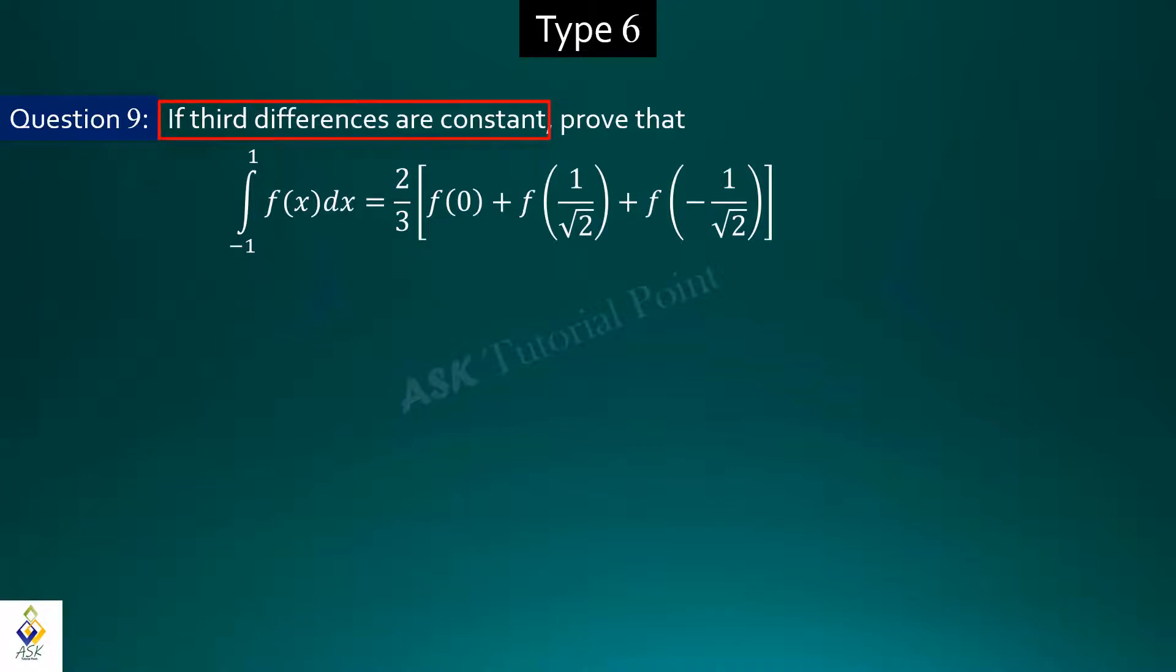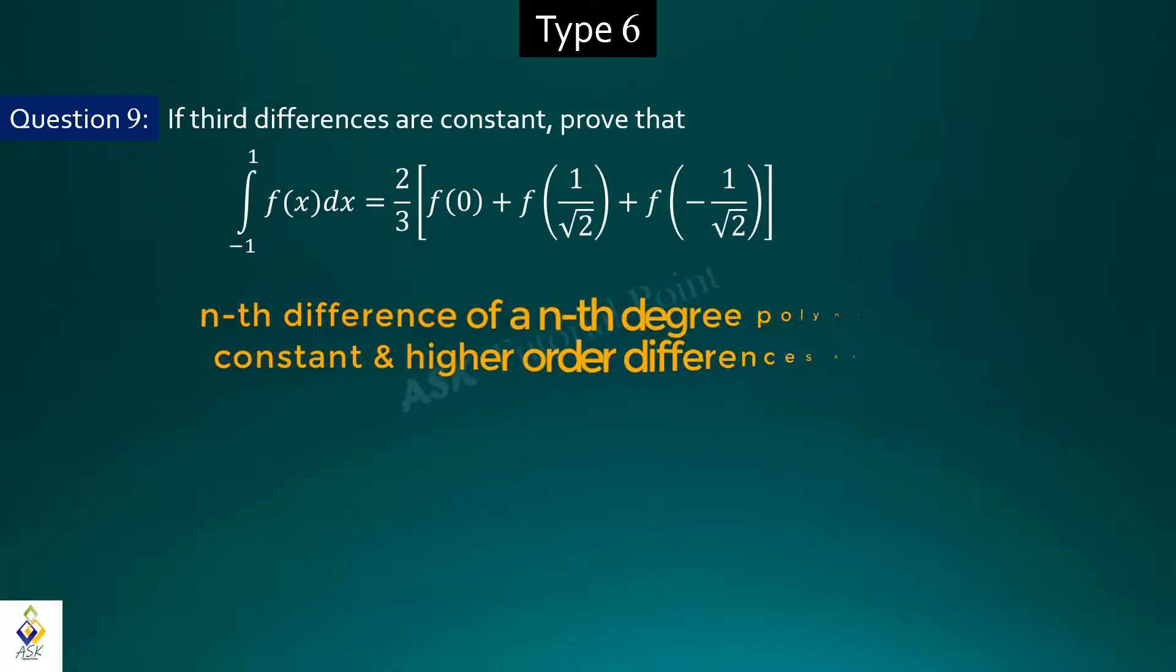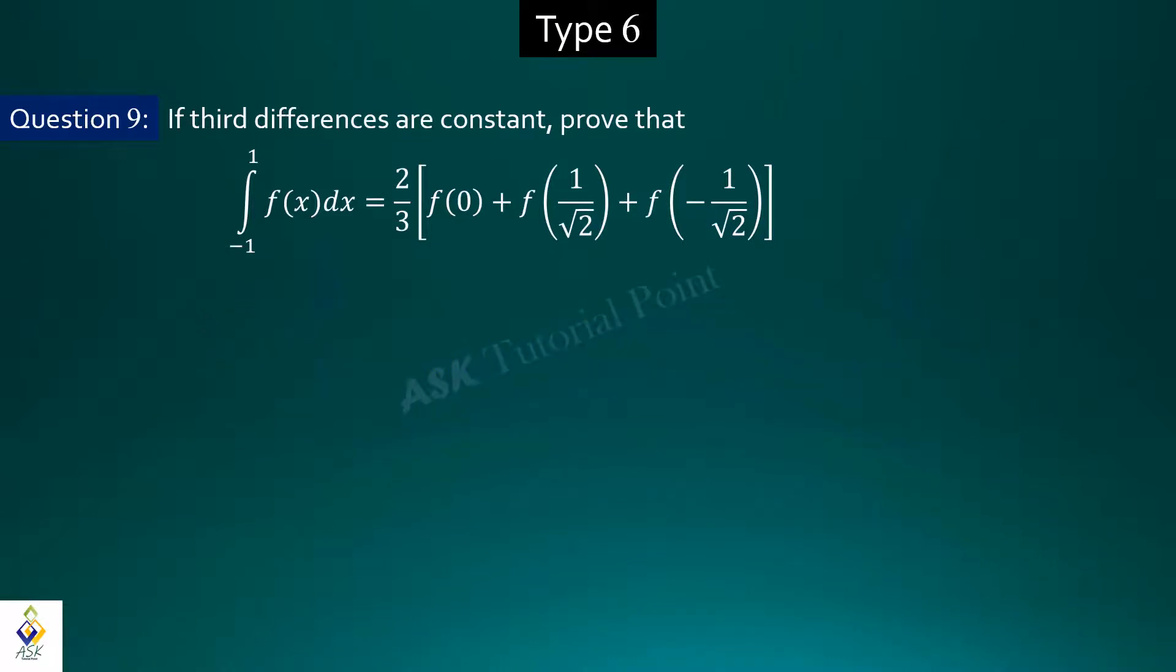It says that third difference is constant. In this case, we can apply the fundamental theorem of nth difference. As we know, the nth difference of an nth degree polynomial is constant and the higher order differences are 0. So by using this concept, we can say that third difference of a third degree polynomial is constant.